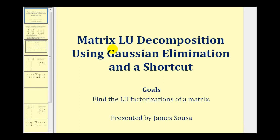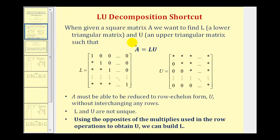Welcome back for a second lesson on matrix LU decomposition. In this video, we'll use Gaussian elimination and a shortcut to determine the LU decomposition. The goal of LU decomposition is to write a square matrix A as the product of matrix L and matrix U, where matrix L is a lower triangular matrix and matrix U is an upper triangular matrix.